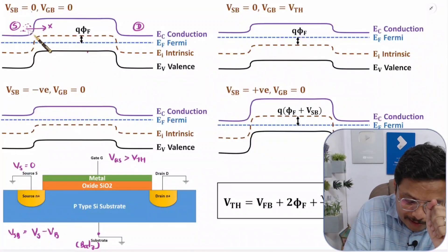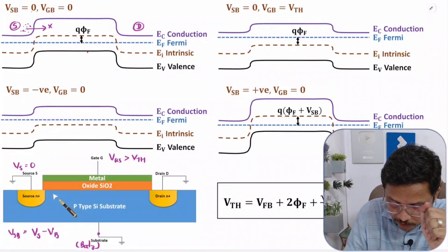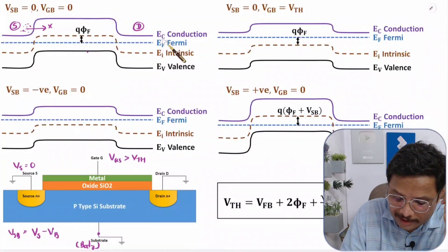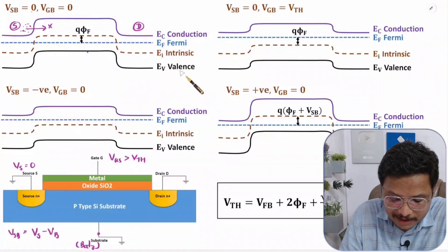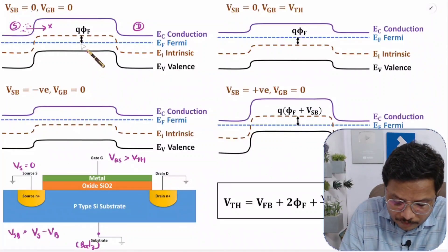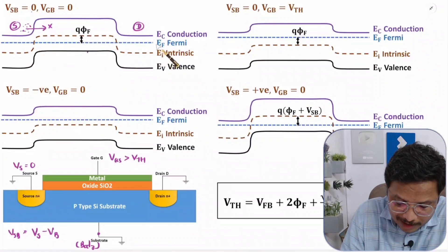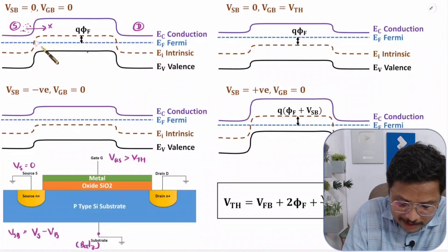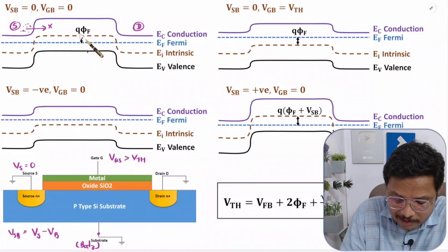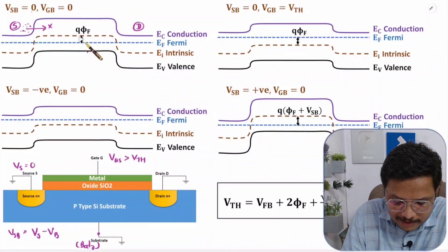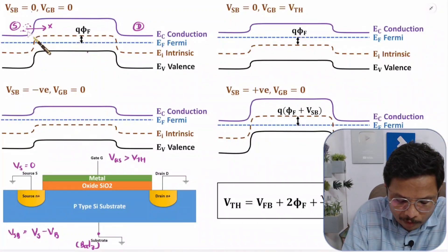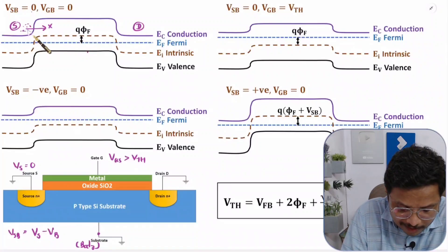Electrons at the source side face an energy resistance and cannot move toward the drain. In terms of energy bands, the Fermi energy is shown in blue and the intrinsic energy in gray. The separation from intrinsic to Fermi energy is q·φf, where φf is the Fermi potential. This resistance prevents flow of electrons.